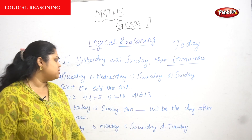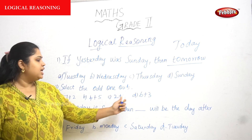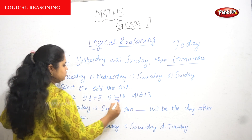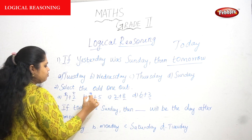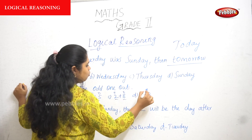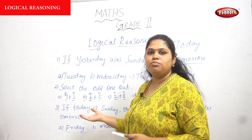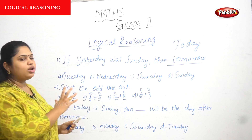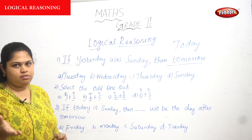Select the odd one out: 7+2, 4+5, 2+8, and 6+3. Every option has two digits. Now let's check odd and even: 7+2 is odd+even, 4+5 is even+odd, 2+8 is even+even, 6+3 is even+odd. So 2+8 has both even numbers — that makes it different from the rest.